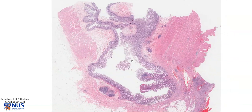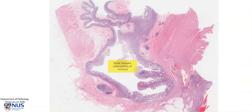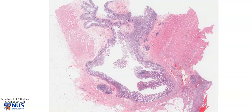Moving back on to low magnification, we can see that there is a flask-shaped outpouching of the mucosa of the large bowel into the wall, through the layers of the wall. And in fact, you can see that it kind of penetrates through the muscularis propria. And the mucosa is intact throughout this particular diverticulum.